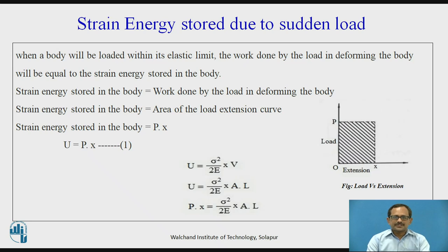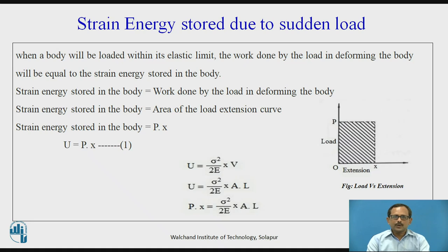In general, strain energy stored in the body is given by sigma squared upon 2E into V, where V is the volume equal to A into L. Therefore, strain energy U equals sigma squared upon 2E into A into L. But equation 1 gives the strain energy stored in the body due to suddenly applied load, which is equal to P into x. Putting this value, we get P into x equals sigma squared upon 2E multiplied by A into L.